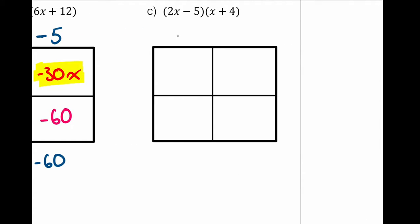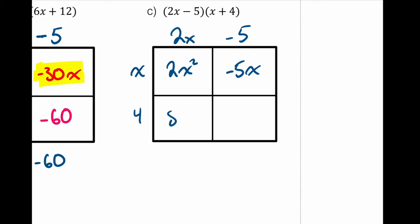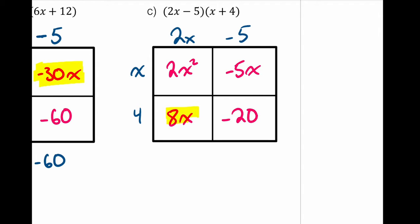Box method example (c): (2x − 5)(x + 4). Place 2x and negative 5 across the top, x and 4 on the side. Multiply columns and rows: 2x times x = 2x squared, x times negative 5 = negative 5x, 4 times 2x = 8x, 4 times negative 5 = negative 20. The diagonal like terms are 8x and negative 5x, so the simplified form is 2x² + 3x − 20.